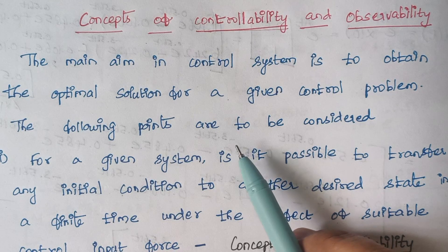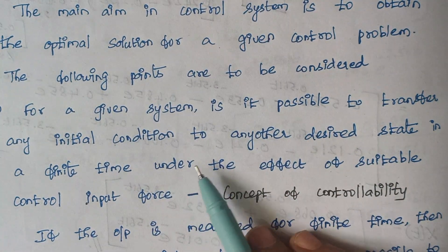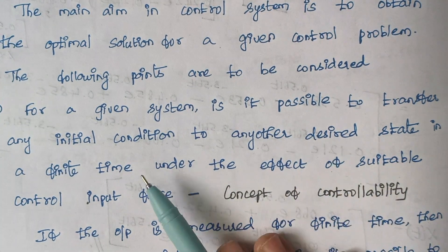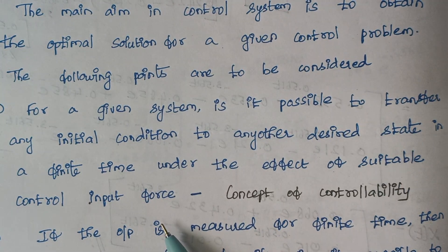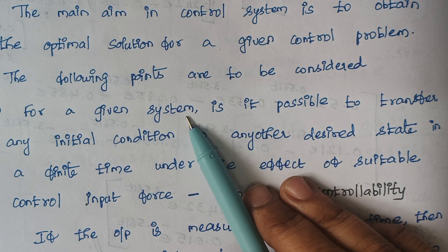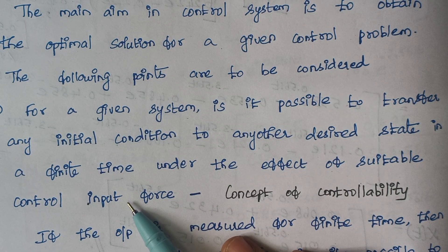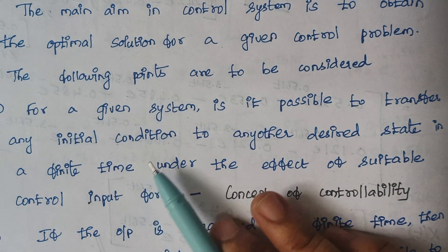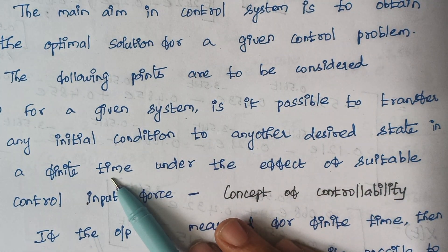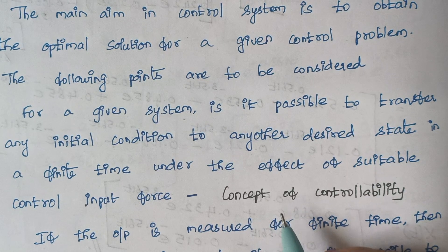The following points are considered. First, for a given system, is it possible to transfer any initial condition to any other desired state in a finite time under the effect of suitable control input force? That is, we have a system and we have to change it from its initial state to a particular state by giving some suitable input. If this can be done in a finite time — for example, 2 minutes, 5 minutes, or 2 milliseconds — then that comes under the concept of controllability.